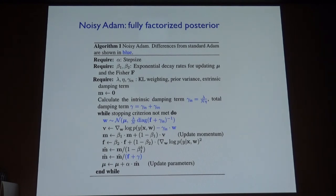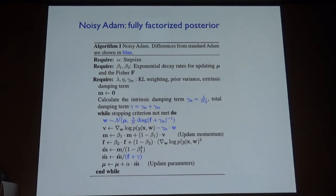Question: Doesn't Adam use something that looks like the square root of the Fisher rather than the Fisher? Great question — you have flexibility in what you put in the denominator. You can use the square root of the Fisher matrix, which would be equivalent to Adam. It doesn't affect the fixed points you wind up with. We actually found in our experiments that dividing by the Fisher generally worked a bit better than dividing by the square root.